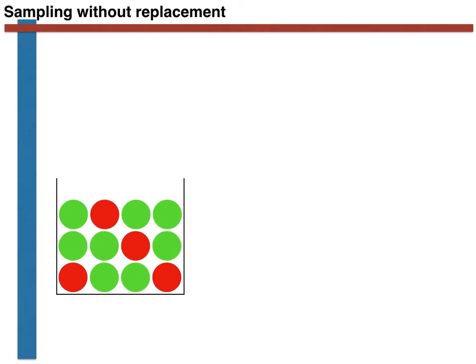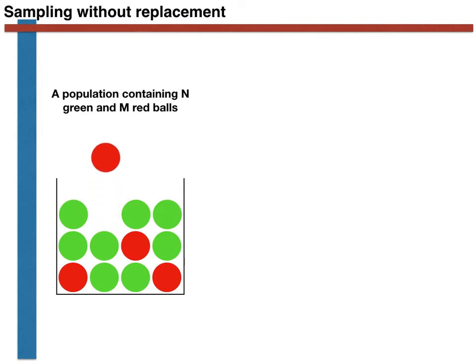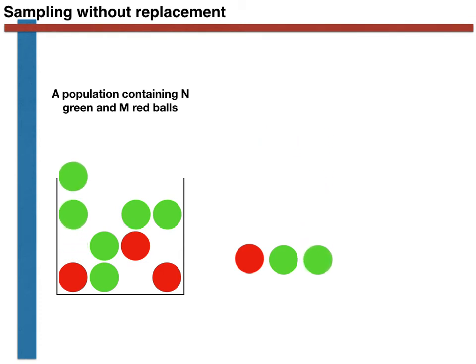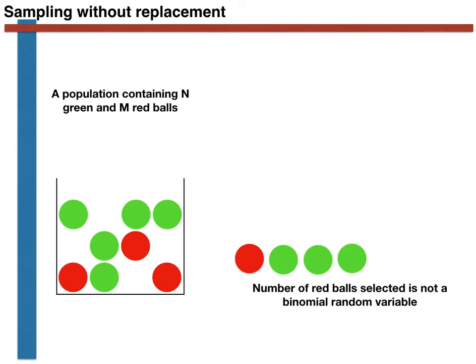Now, the obvious question is: what happens if we do not return the ball to the cup after it has been selected? In other words, can we have a random variable that describes how many balls have been selected if we do the sampling without replacement, as is shown in the movie here? It is important to note that the number of red balls is not given by a binomial random variable in this case. The reason for this is clear: the probability of selecting a red ball is not constant.